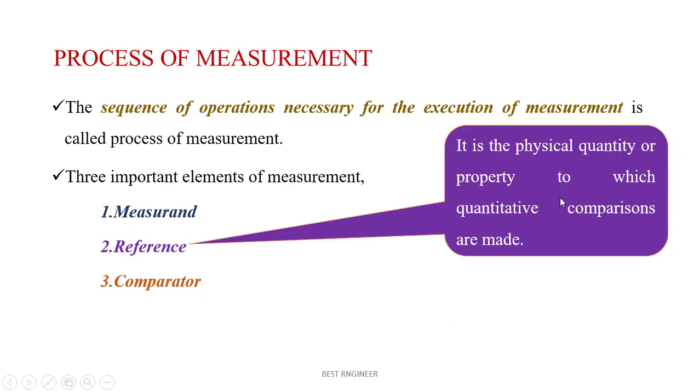Reference is the physical quantity or property to which quantitative comparisons are made. Suppose, see this picture. There is a slip gauge with the exact height of 20 mm. We would like to compare the object we measure here. We need to compare with the reference, because this reference is a highly accurate measured piece. So this piece is called reference piece.